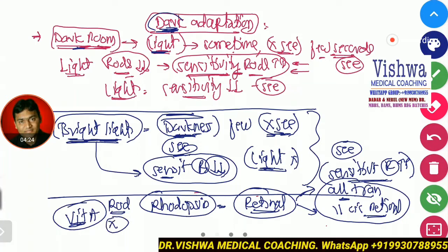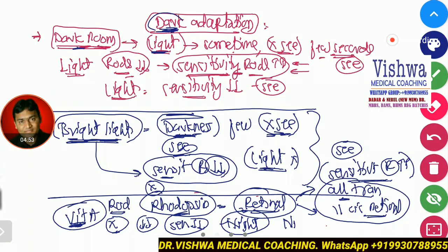The retinol comes from vitamin A. So if you are not consuming vitamin A properly, and vitamin A consumption is less, then this pigment — rhodopsin — is not synthesized properly. As a result, rod sensitivity is impaired, especially at night. That is what is called night blindness.